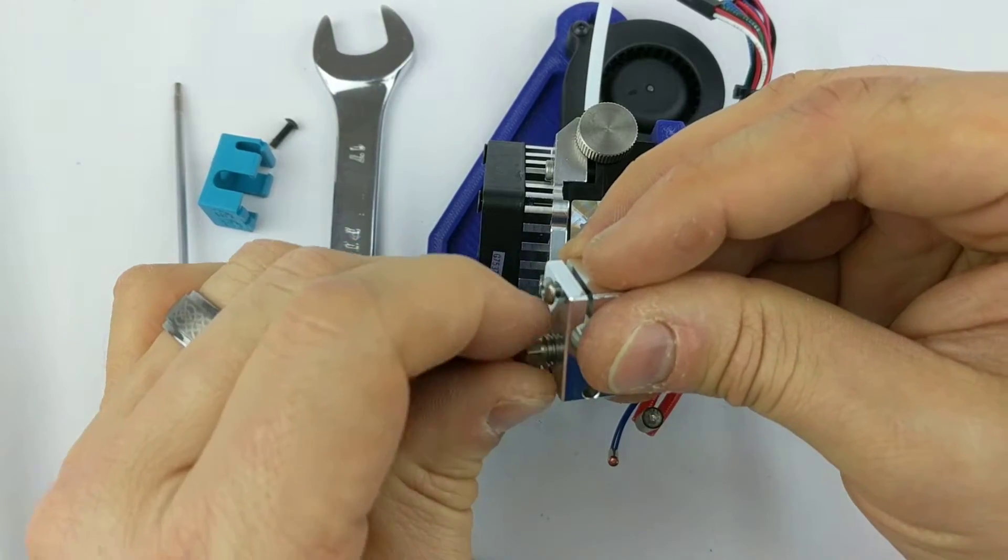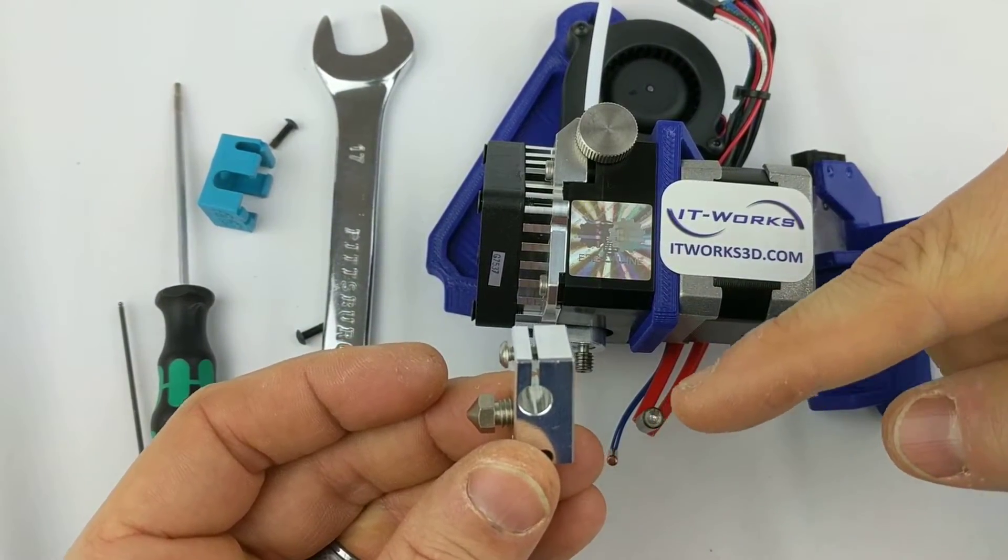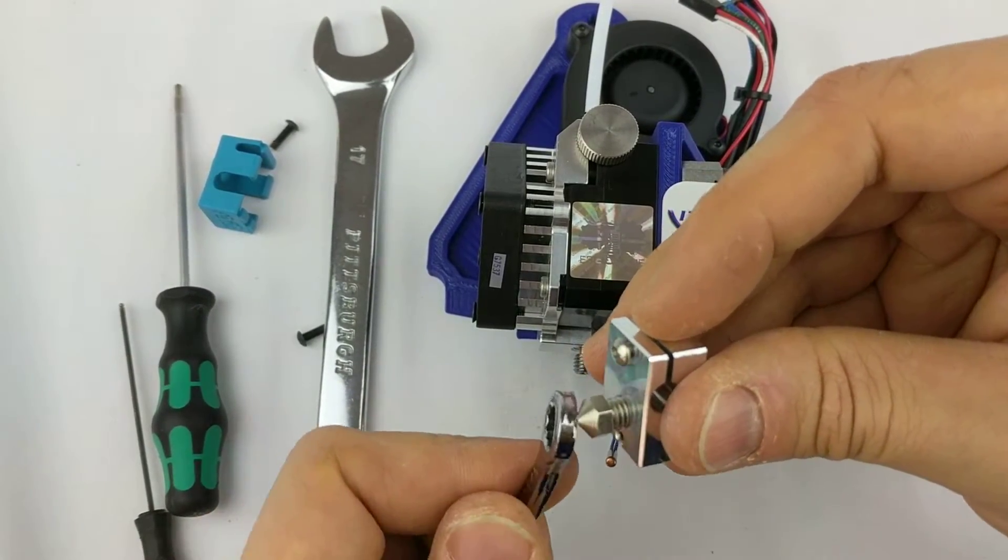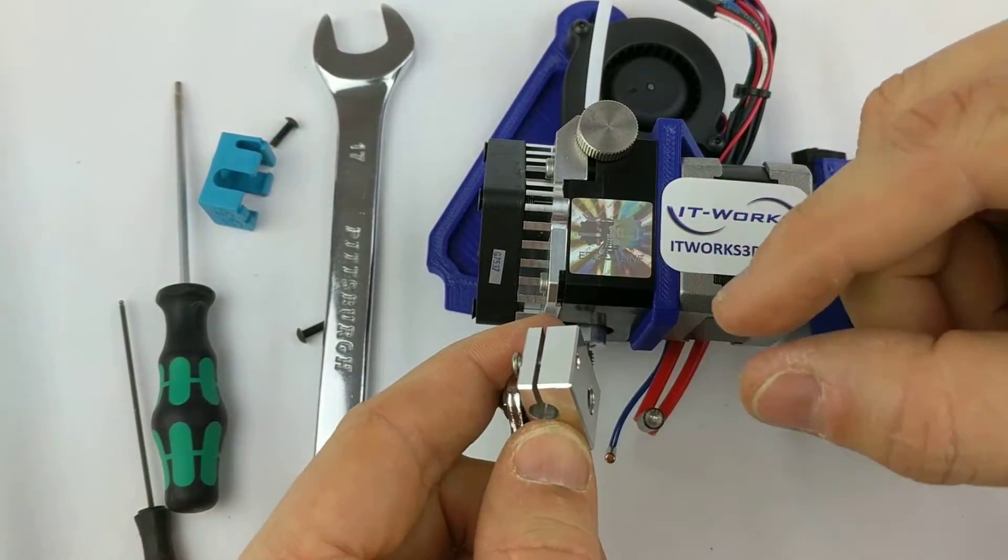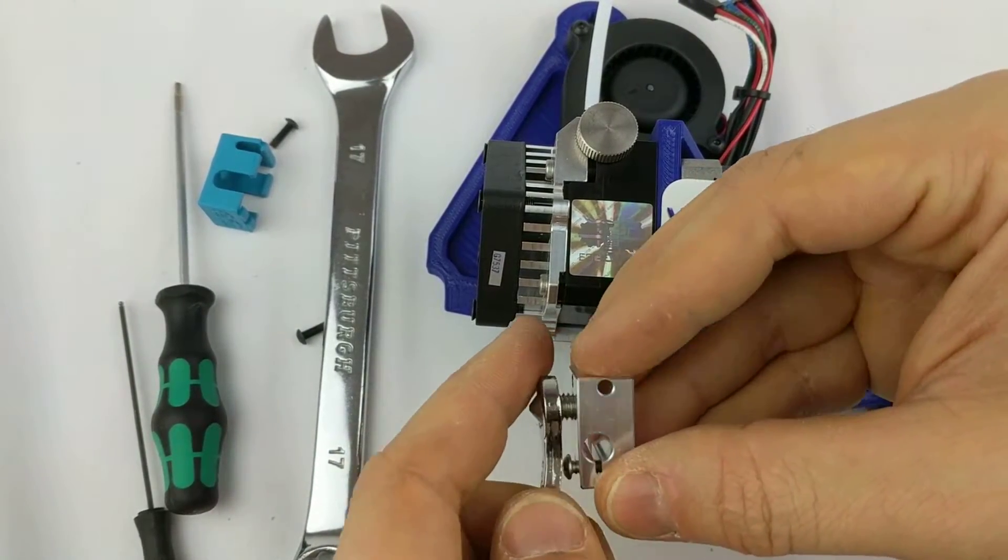I'm going to go ahead and remove the nozzle from the heater block. Now, if they come out together with the heat break in here, which is handy if you're changing it, what I'll usually do is then put a wrench on here, put a wrench on the block, and break the nozzle loose, and that'll often break the nozzle loose from the heat break inside of here.